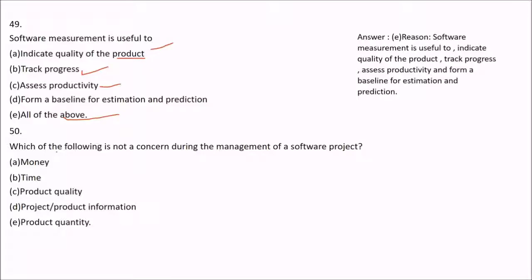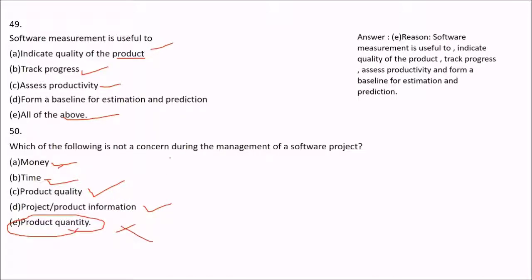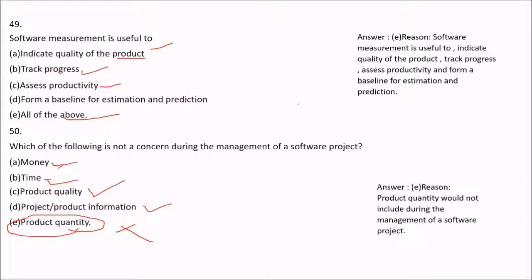Question 50: Which of the following is not a concern during the management of a software project? Options include money, time, product quality, project and product information, and product quantity. Money, time, product quality, and project and product information are all concerns. Product quantity is not a concern during software project management. The answer is product quantity. These were a few more MCQ questions on software engineering, with more questions coming. Thank you.